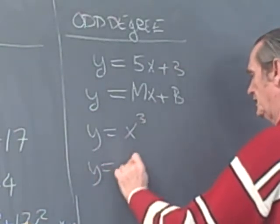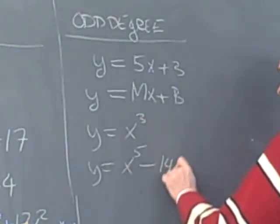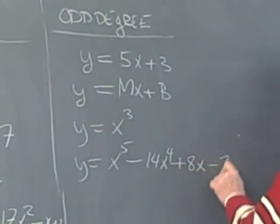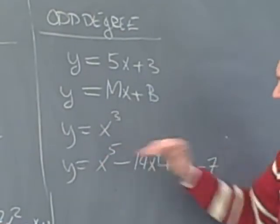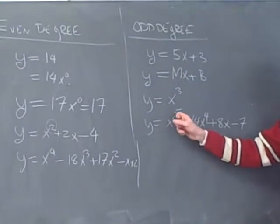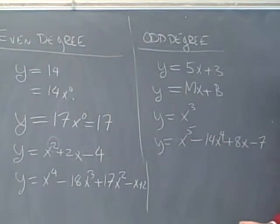y is equal to x to the 5th minus 14x to the 4th plus 8x minus 7 is an odd degree polynomial. So, again, the degree of the highest degree term is odd.